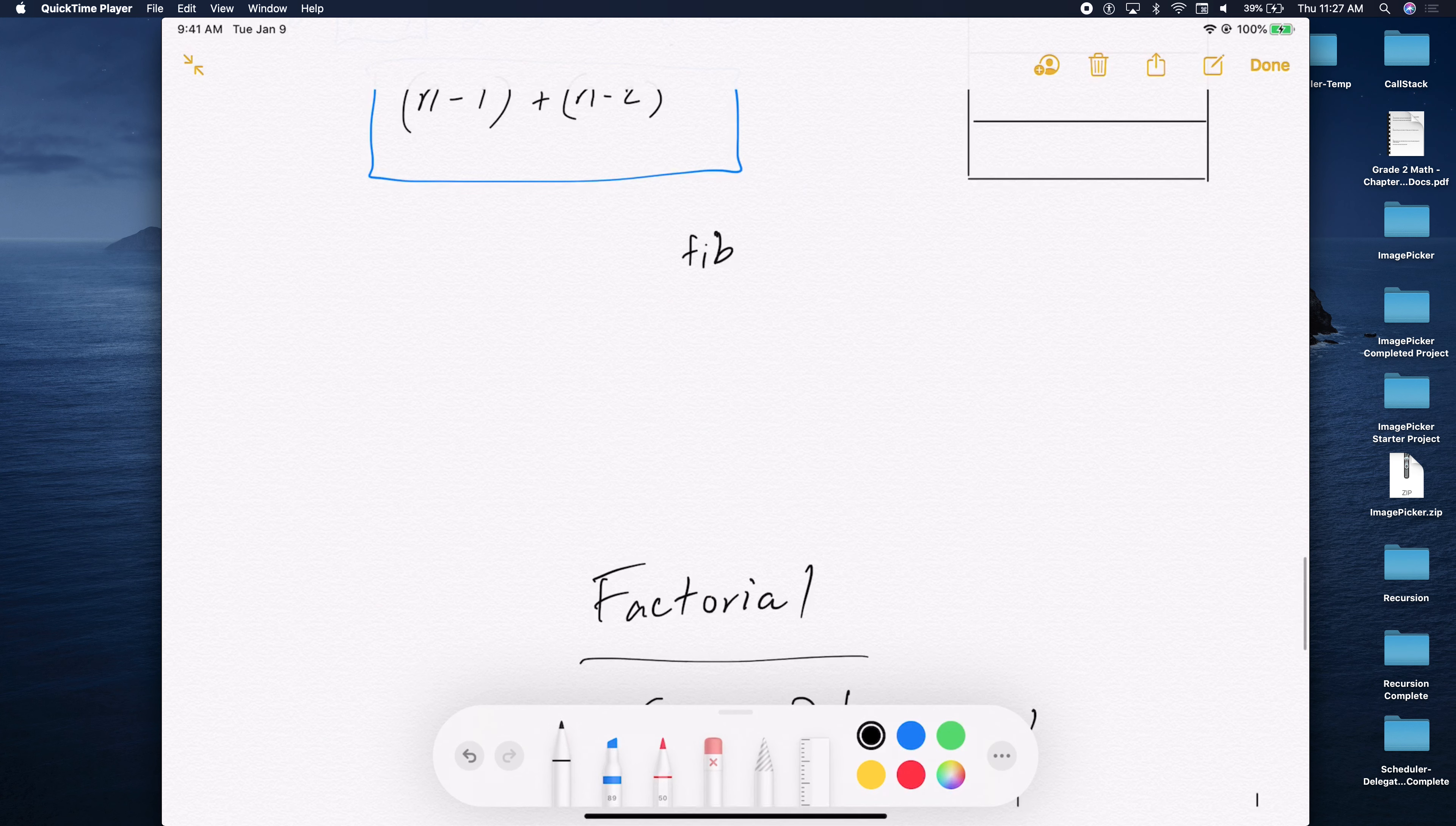So if we do the Fibonacci of 4, for example, using the formula, everybody, let's pay attention here. Using the Fibonacci formula, if I'm looking for the Fibonacci of 4, what am I doing?